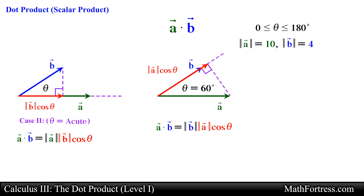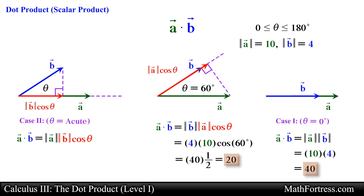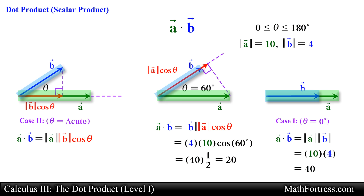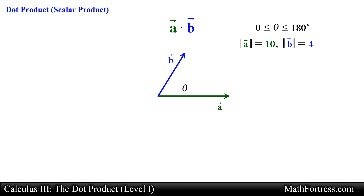As an example, let's find the dot product between vector a and vector b when theta equals 60 degrees. Using the geometric interpretation, we multiply the magnitudes together obtaining 40, then multiply by cosine of 60 degrees, which equals one half, giving a final answer of 20. Notice the dot product was reduced by half compared to the first case when both vectors pointed in the same direction at theta equals 0 degrees. This occurred because the projection of one vector in the direction of the other was reduced. Even though both vectors had the same magnitude, the direction changed the value of the final answer. This tells us that the dot product is essentially multiplication taking direction into account.